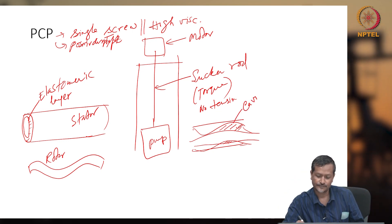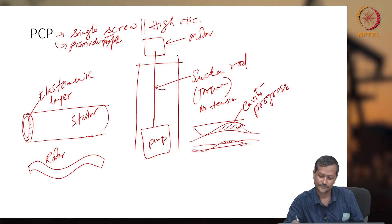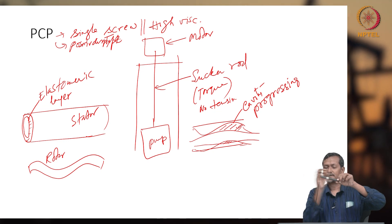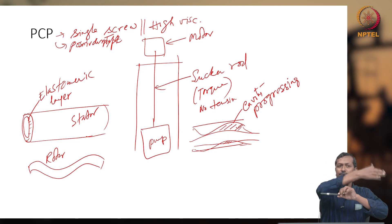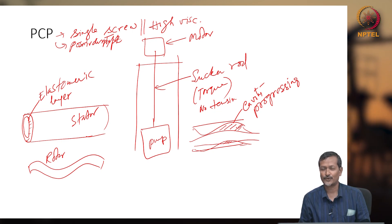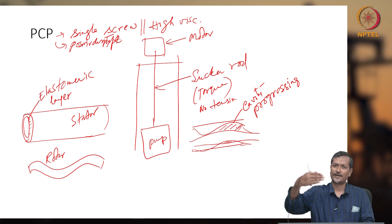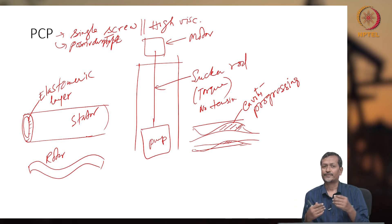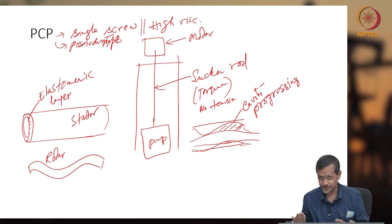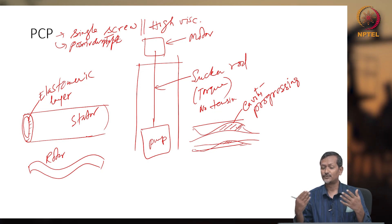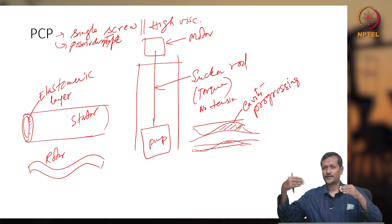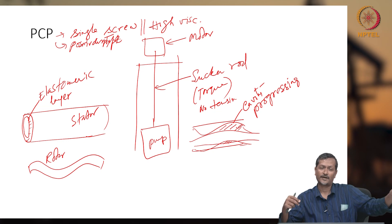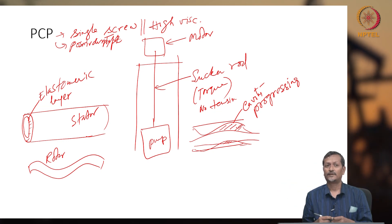The cavity continuously progresses, taking a fixed amount of fluid with each rotation. This makes it a positive displacement pump — you can develop any amount of pressure or head. It can also be used as a metering pump: controlling rotational speed controls the exact amount of fluid delivered. For example, 2 rotations could deliver 100 ml and 3 rotations 150 ml.